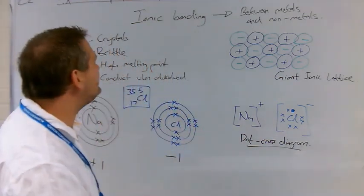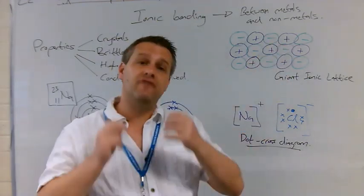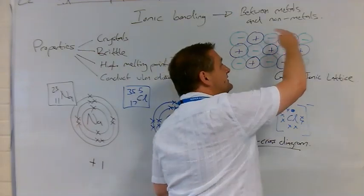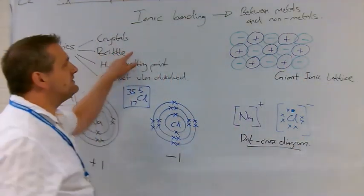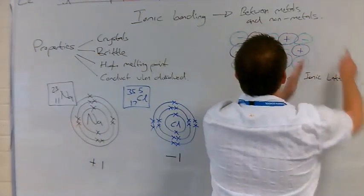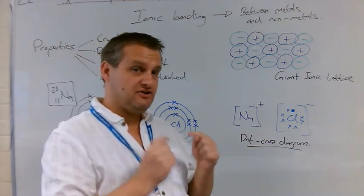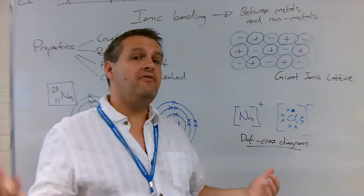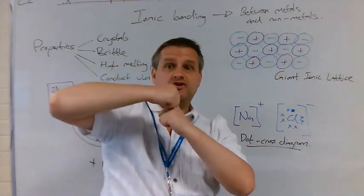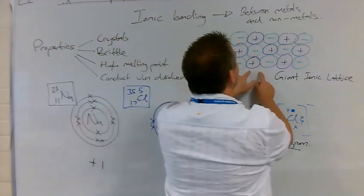Does the giant ionic lattice explain our properties? Yes. The crystal is a giant organised structure — that explains the crystalline shape. Why are they brittle? If you apply a force and shuffle the top layer across, pluses end up next to pluses and minuses next to minuses. Like charges repel, the whole structure shatters — it's brittle. So the crystal structure explains both the crystalline shape and the brittleness.